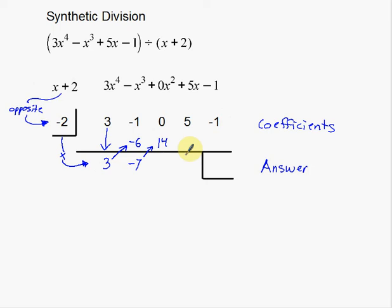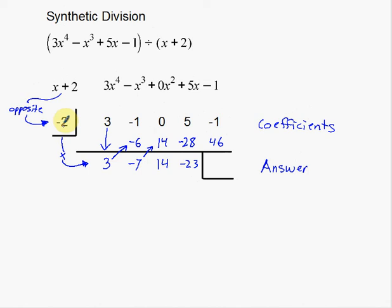Positive 14. And then you just continue the process. Continue the process. So I'm going to add down to get 14, multiply up to get negative 28, add down to get negative 23, and then multiply: negative 2 times negative 23 is a positive 46. Then I just have to add this down: negative 1 plus 46 is 45.